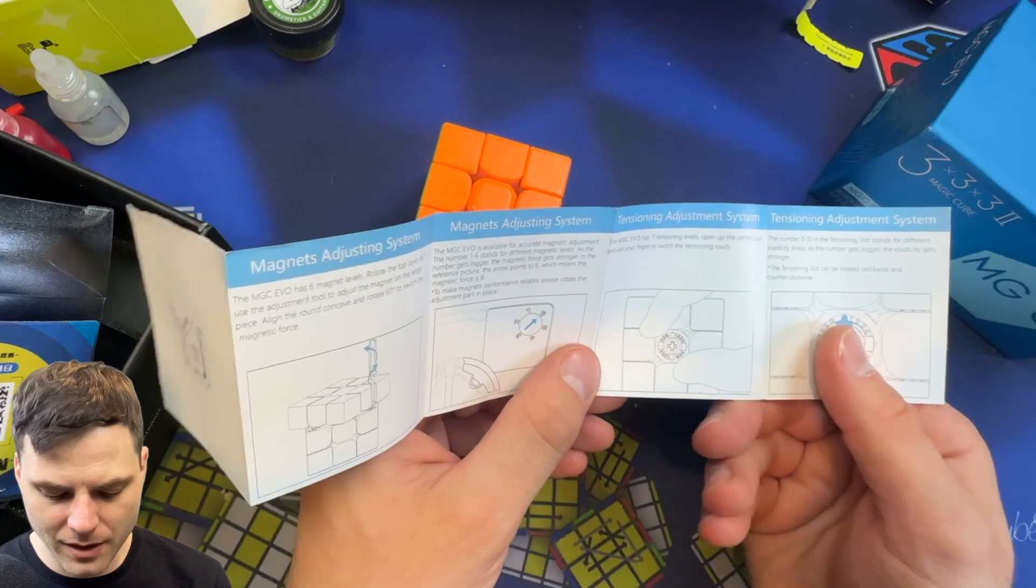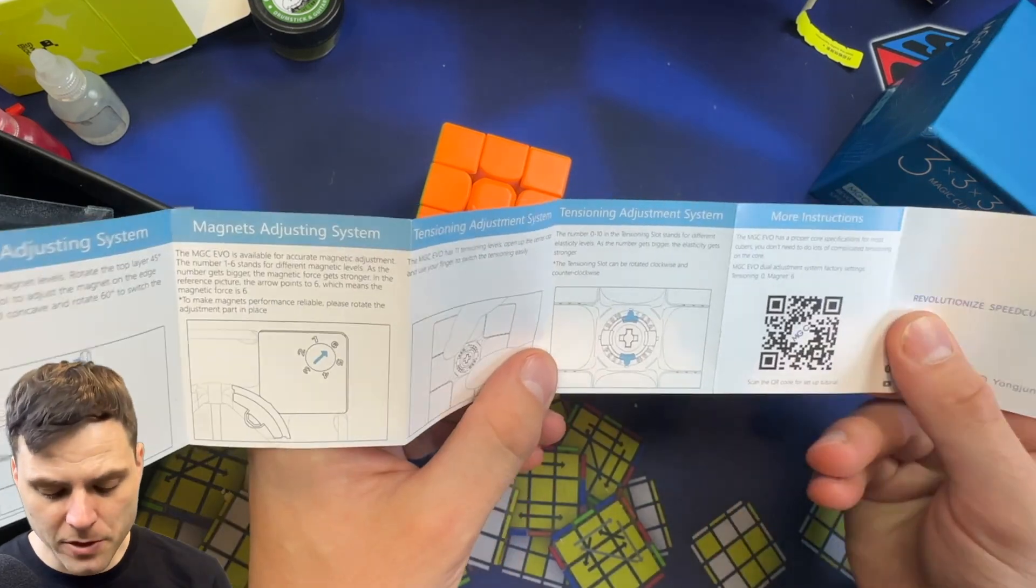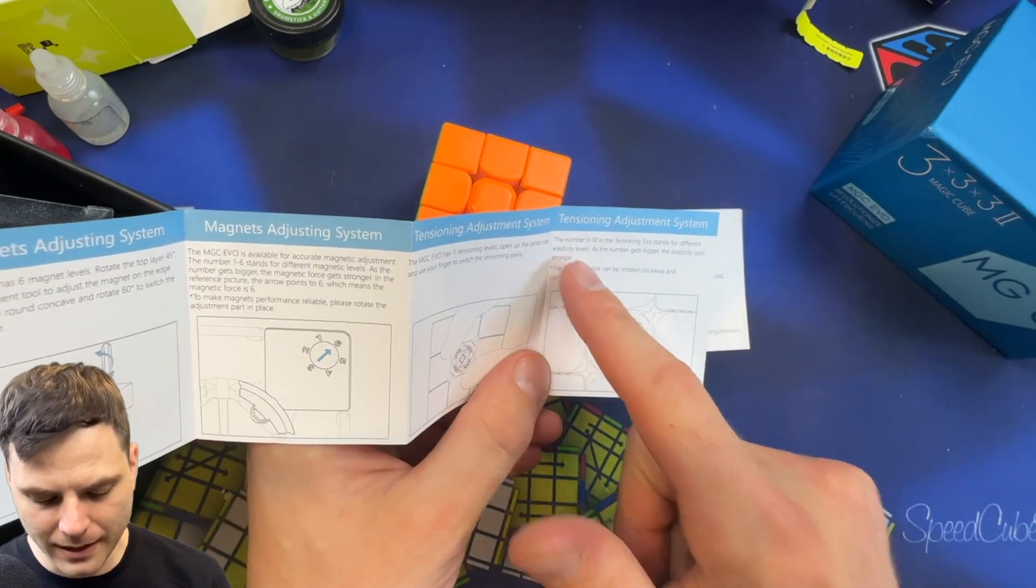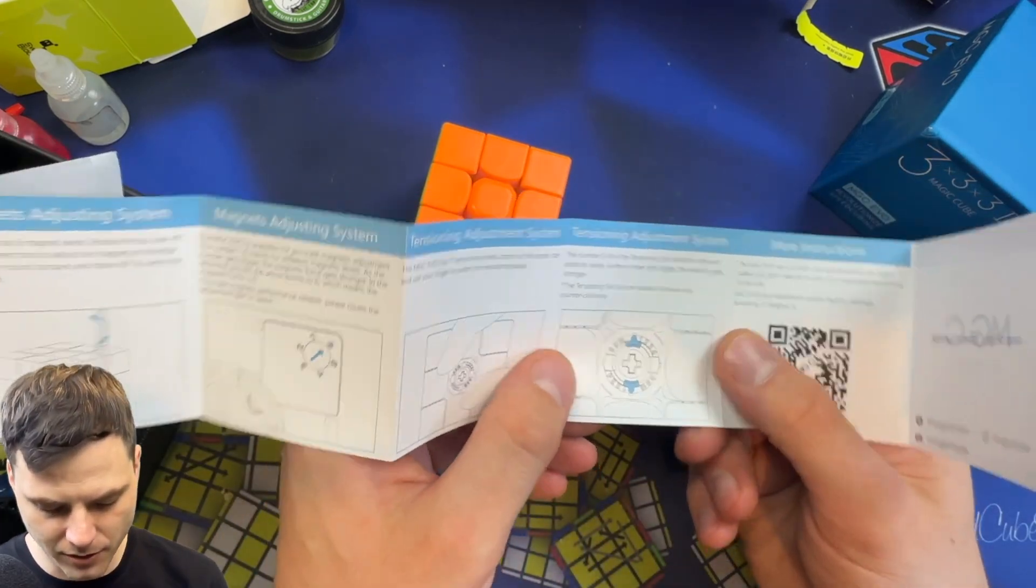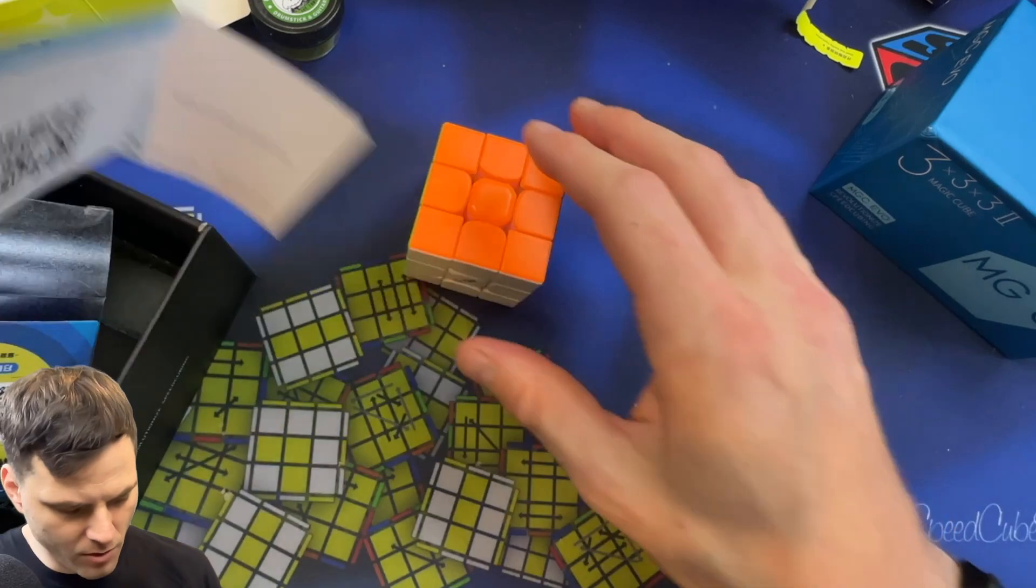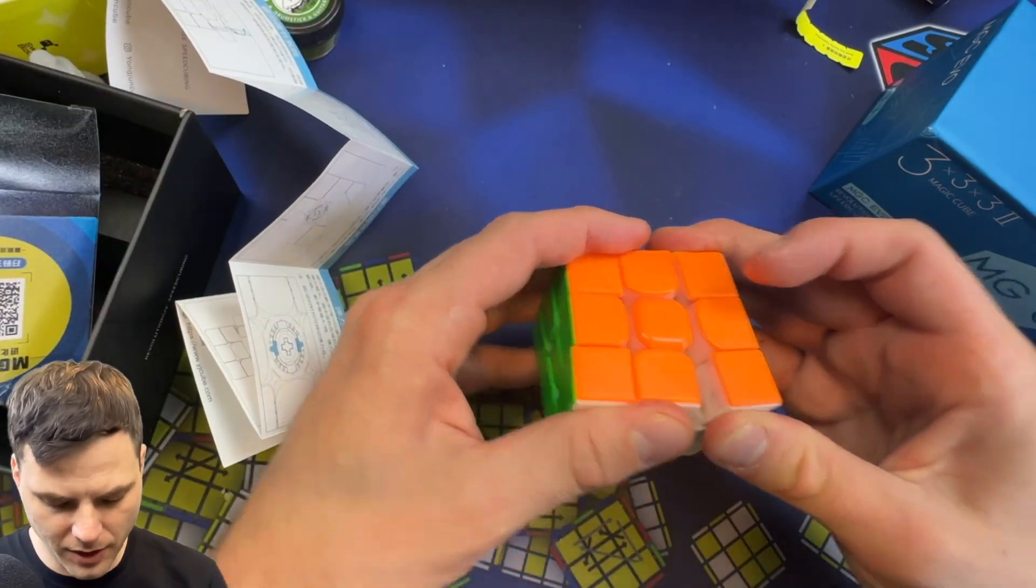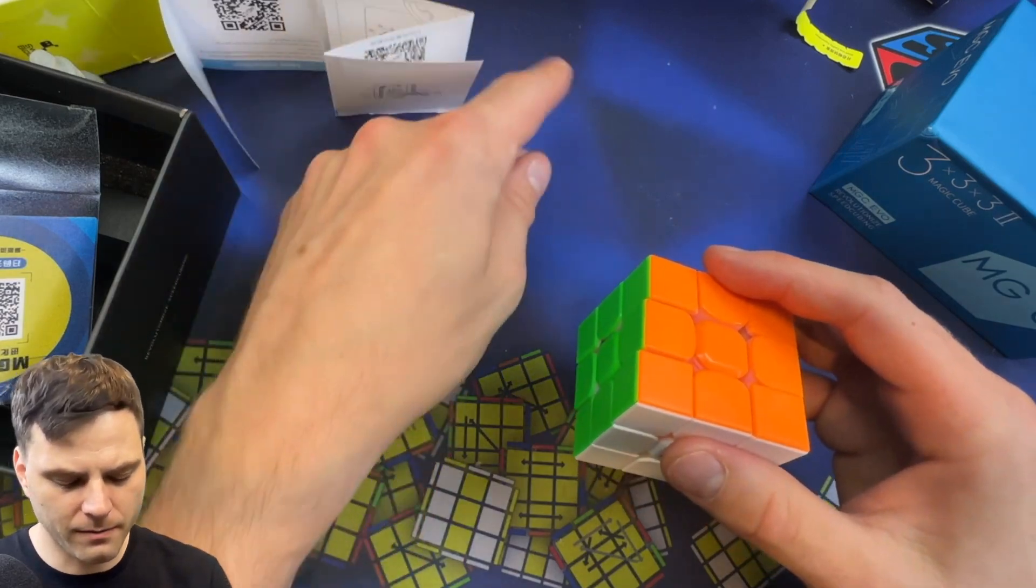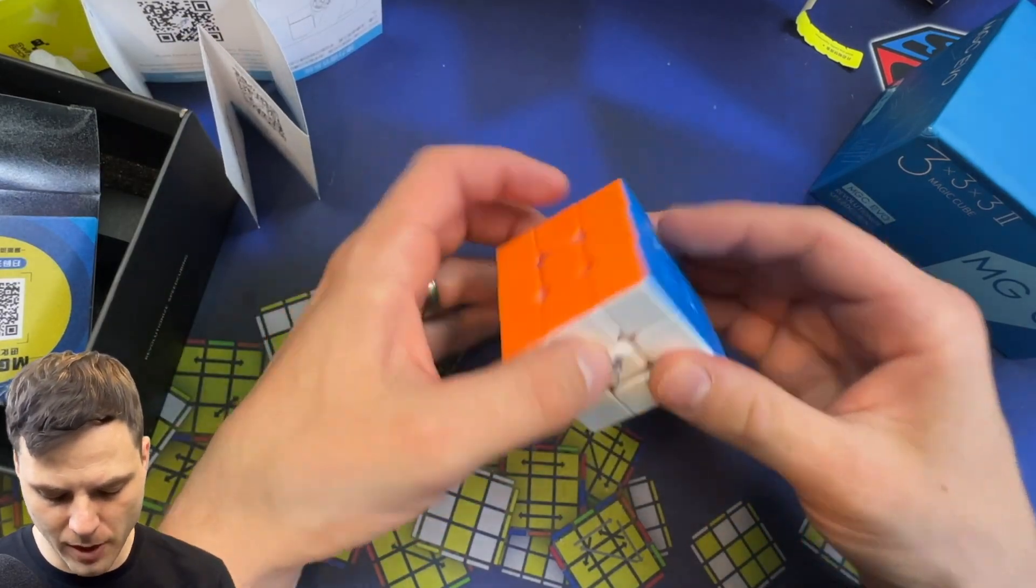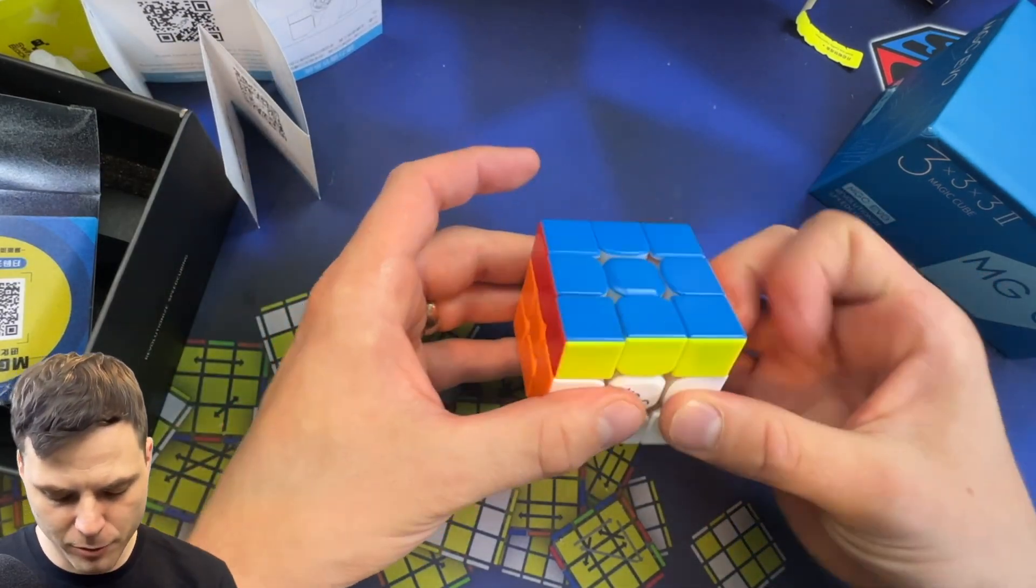Then the tension settings. Eleven tension levels. Number zero through ten in the tensioning slots are for different elasticity levels. I love that they're actually using elasticity levels. That's what I tend to just call it. Is that it? I don't think there's anything to make the actual depth of the centerpiece different, which is fine. For this one, I'm okay with that, but that's my personal preference.